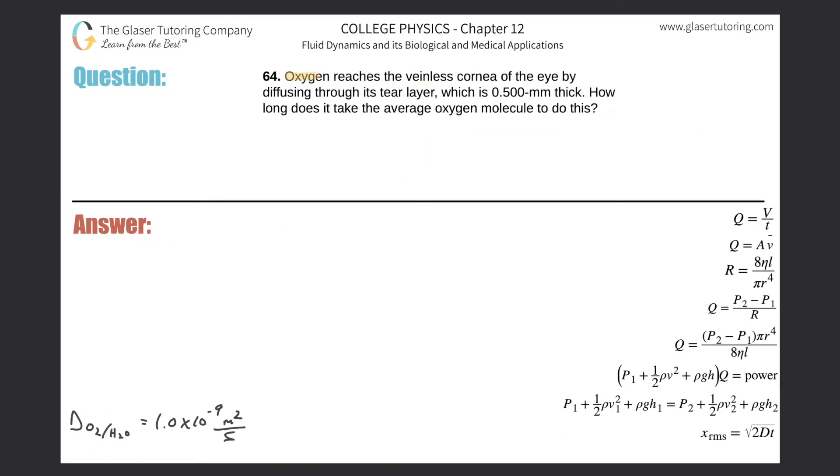Number 64: Oxygen reaches the veinless cornea of the eye by diffusing through its tear layer which is 0.5 millimeters thick. How long does it take the average oxygen molecule to do this? So basically they're giving us a couple of things and they're asking us for the time it takes for basically oxygen to diffuse through a certain tear layer.